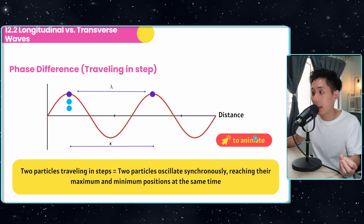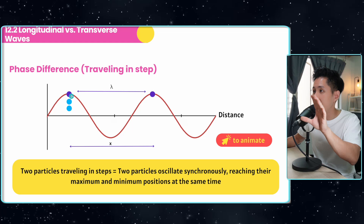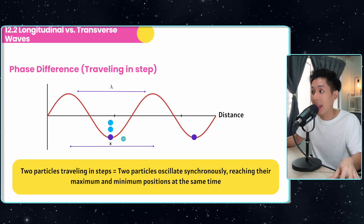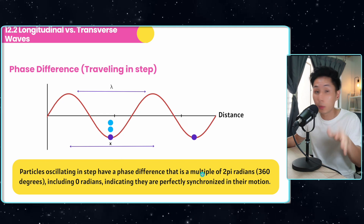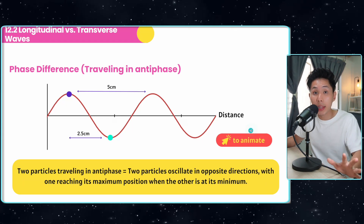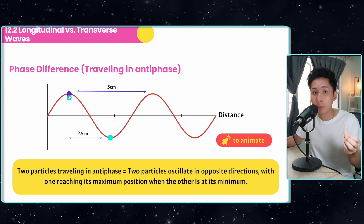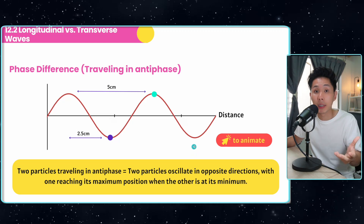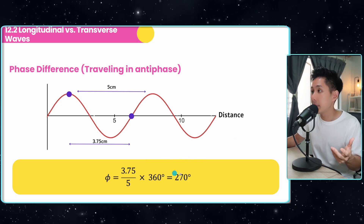Two particles are said to be traveling in phase if they oscillate synchronously, reaching their maximum and minimum positions at the same time. Particles oscillating in phase have a phase difference that is a multiple of 2π radians — 360 degrees — either 0 degrees or 360 degrees, indicating perfect synchronization. Particles traveling in antiphase are the opposite: when one point is at its minimum, the other is at its maximum. In antiphase, the phase difference is 180 degrees.